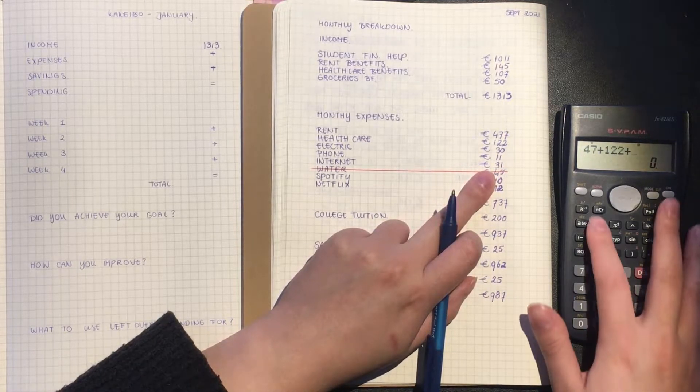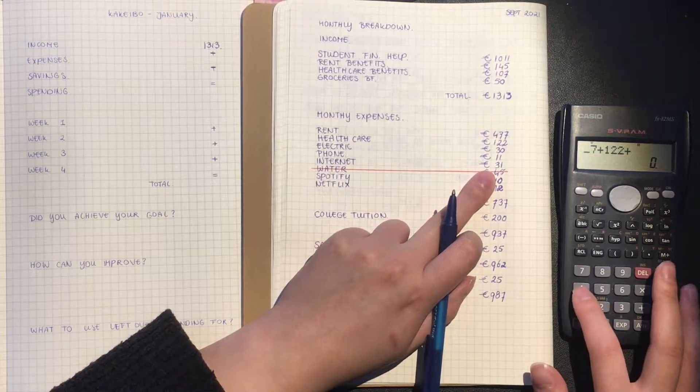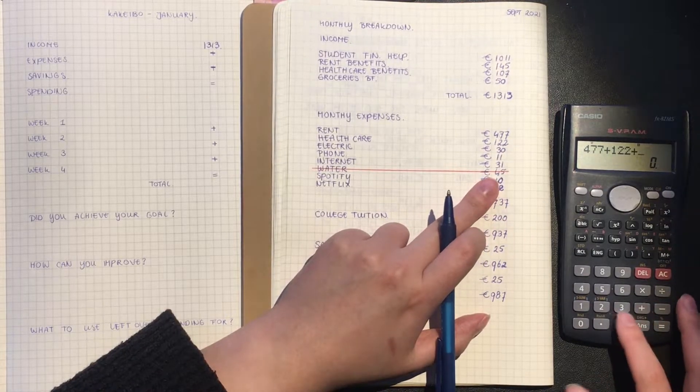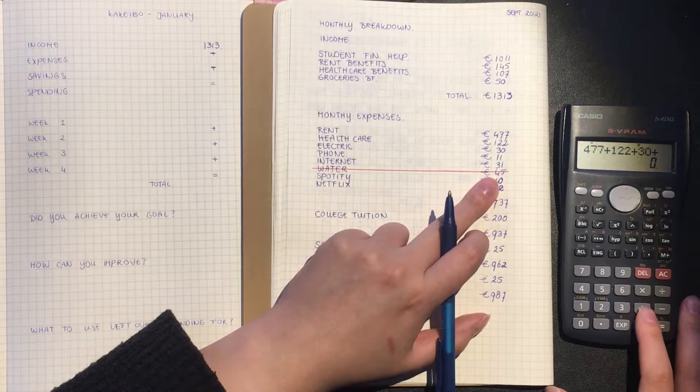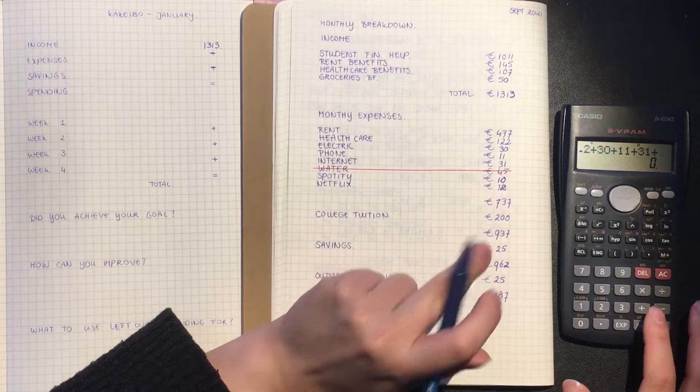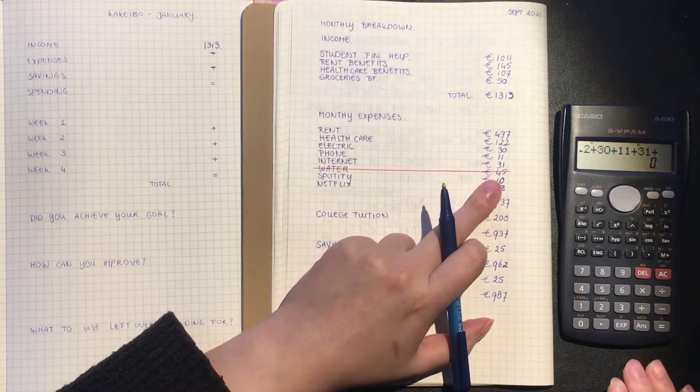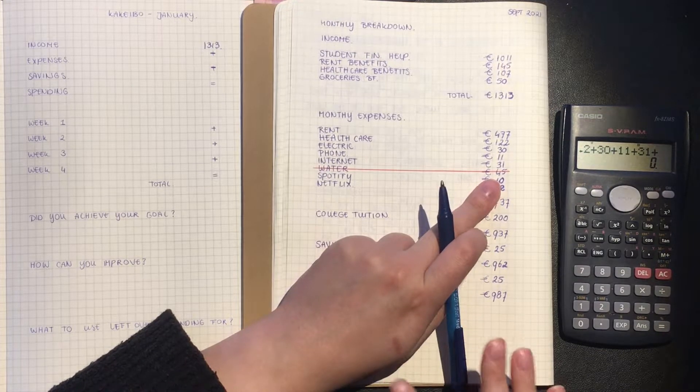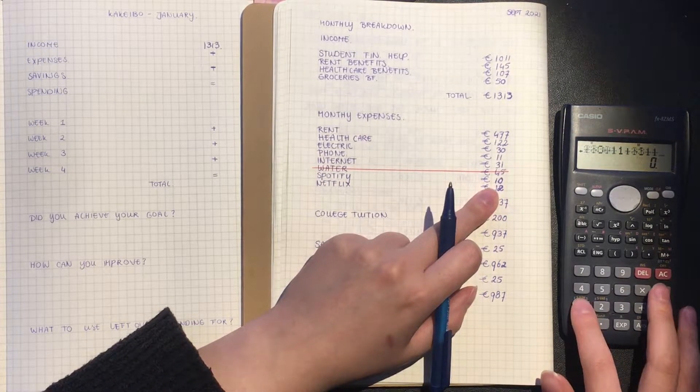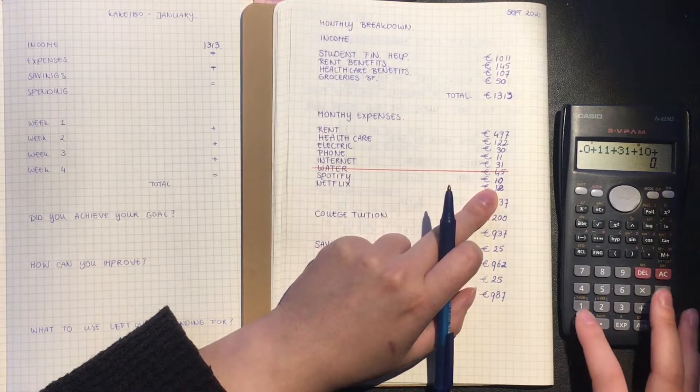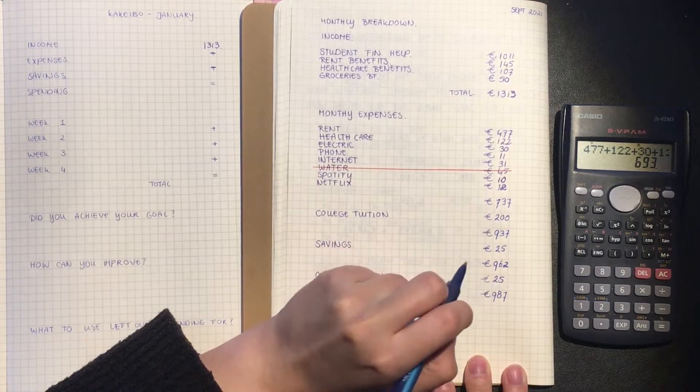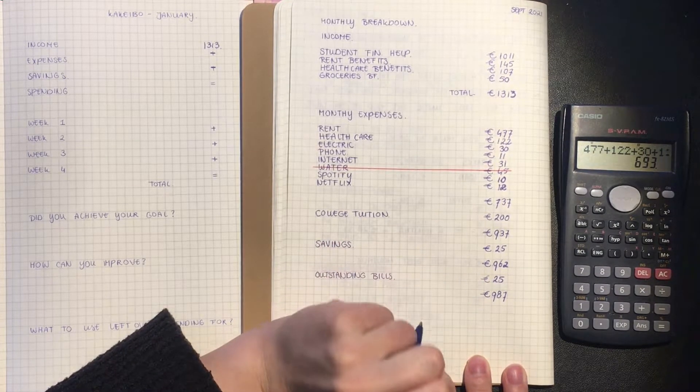122 for my health care, then we have 30 for my electric and heating. Next up is phone 41, 31 for my internet. My water bill is fully funded so I'm not counting that, even though I don't have to pay that in January. Next up is Spotify which is 10, and Netflix is 12. So that means for the month of January I will have 693 euros for my monthly expenses.